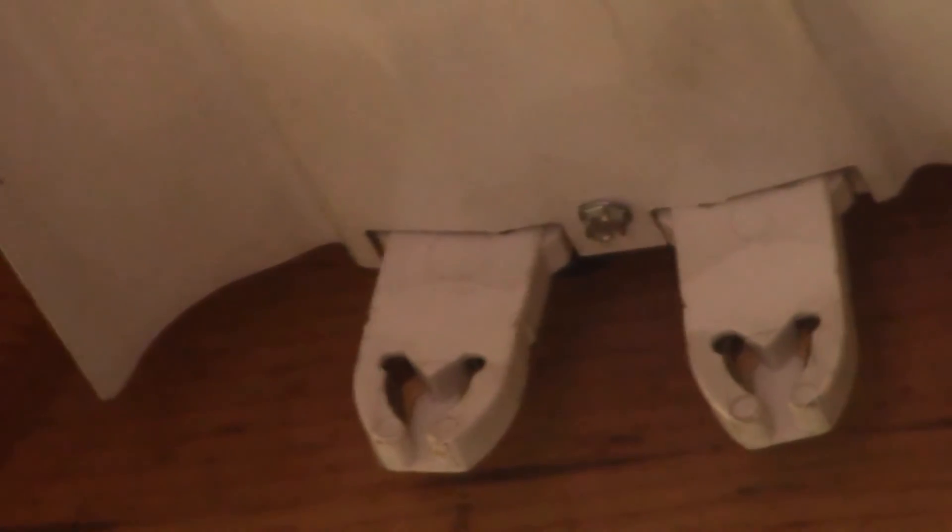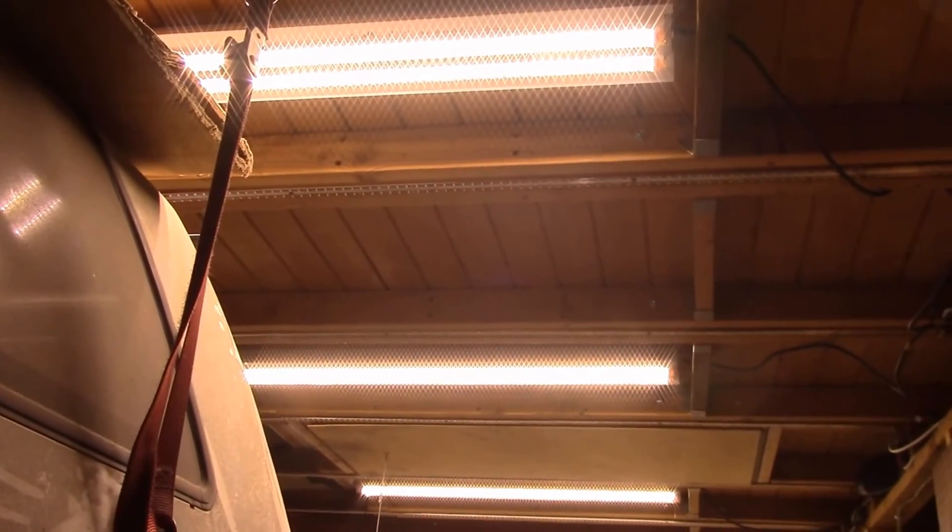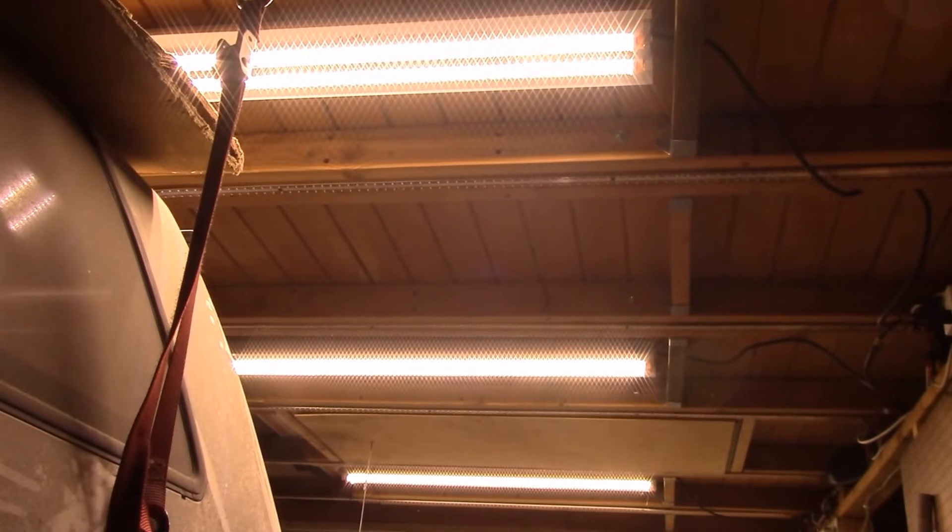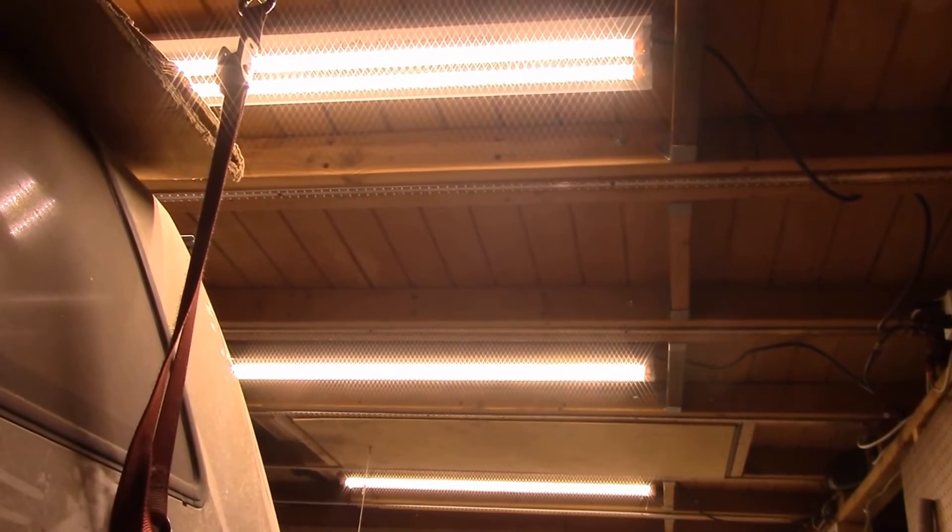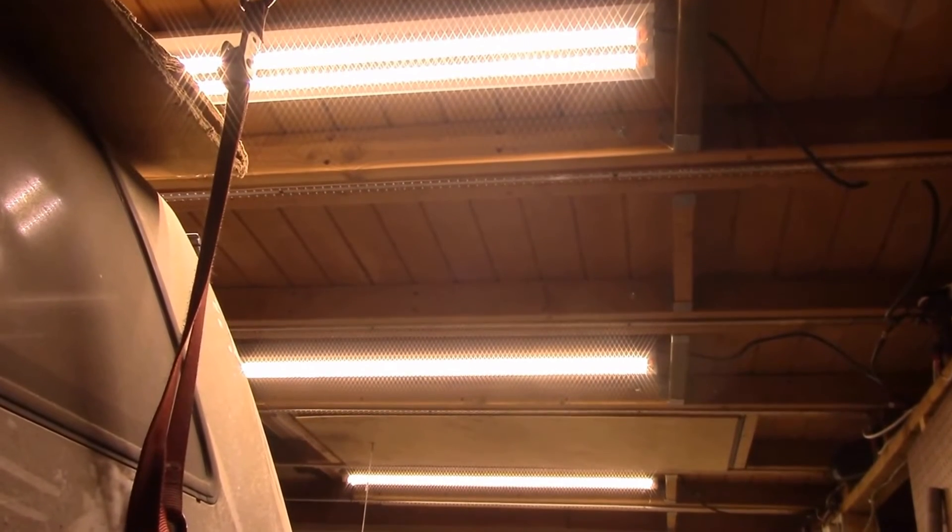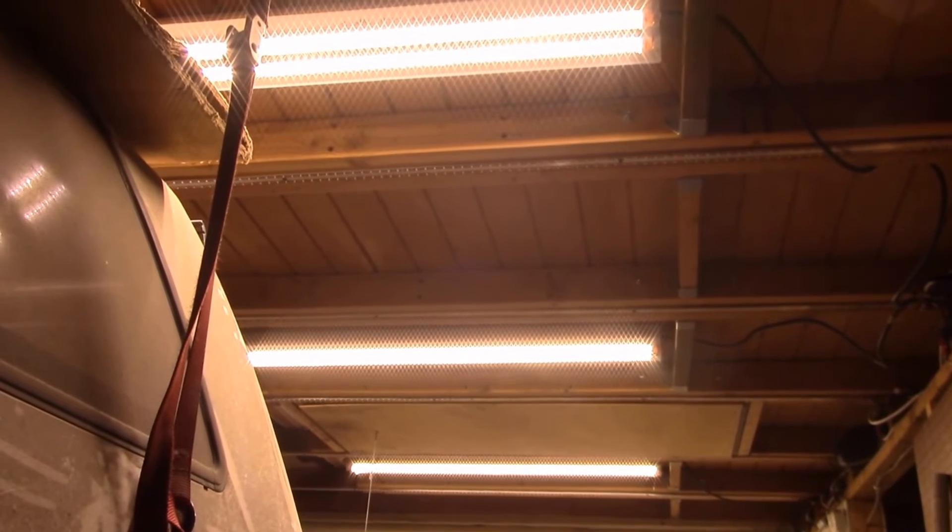So I'll show you what it looks like when it's done. Well, there we go! Three T12 fixtures from the 1980s converted to T8 LED tubes with no ballasts. And I've gone from 240 watts down to 120 watts of light right there. And I'll just show you what my solar looks like.